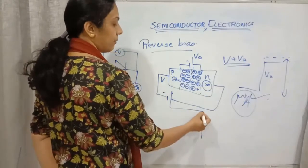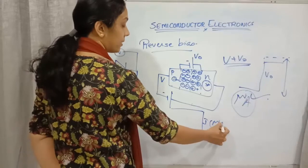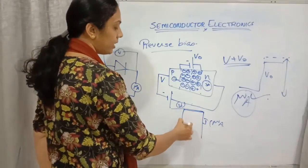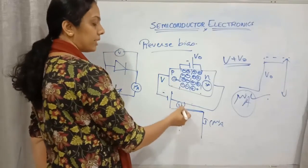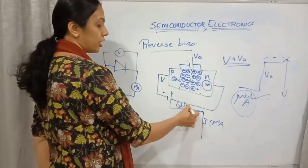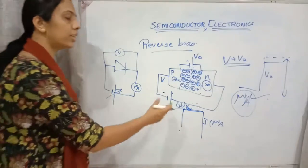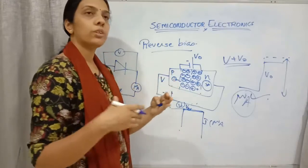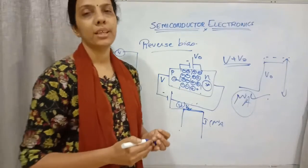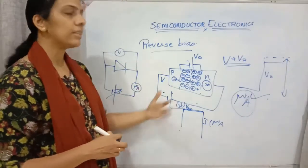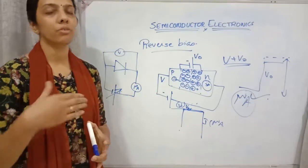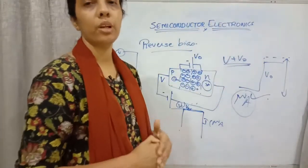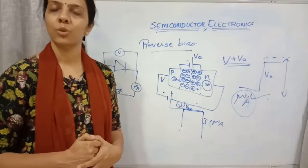If we draw the characteristic curve for reverse biasing, the current is in microamps on one axis and potential on the other. Initially there is very slight current due to minority carriers. At a particular point, the current starts increasing rapidly — that potential is called the breakdown voltage. In practical use, we should not increase the voltage beyond this limiting value or the diode will be damaged. A saturation current forms before breakdown.